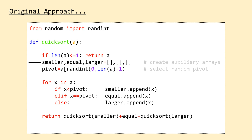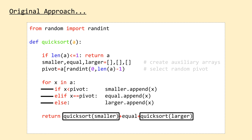In essence, after randomly selecting the pivot point, we would push all values smaller than the pivot into the smaller than array, all values equal to the pivot into the equal to array, and all values larger into the larger than array. After recursively calling Quicksort on the smaller than and larger than arrays, we would stitch all three partitions back together and return the full sorted array.